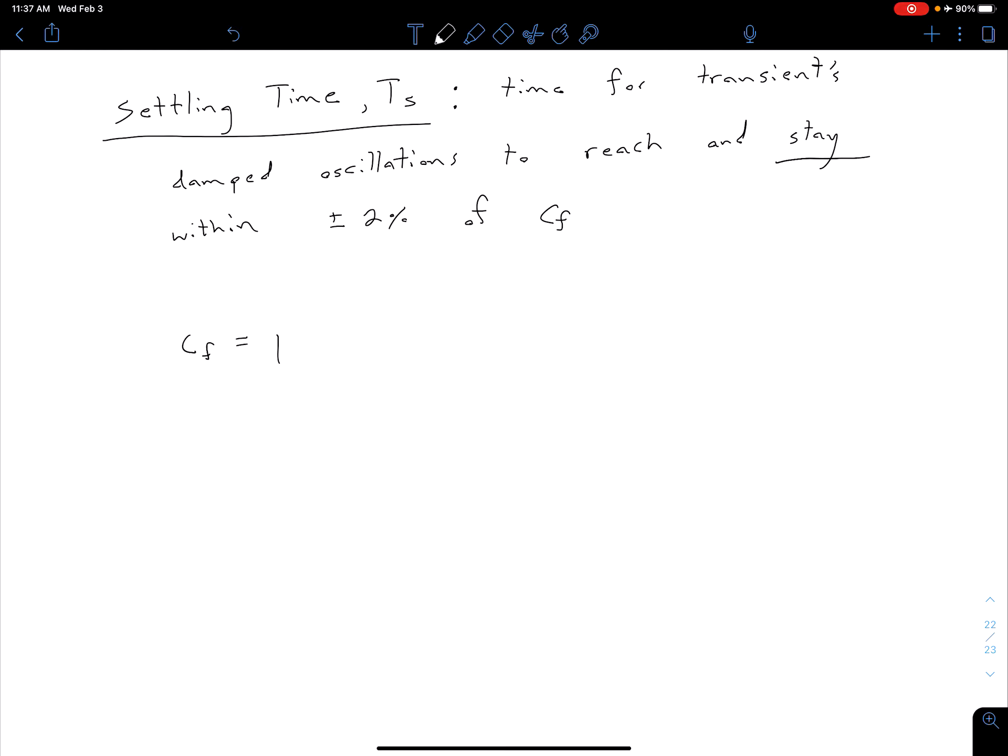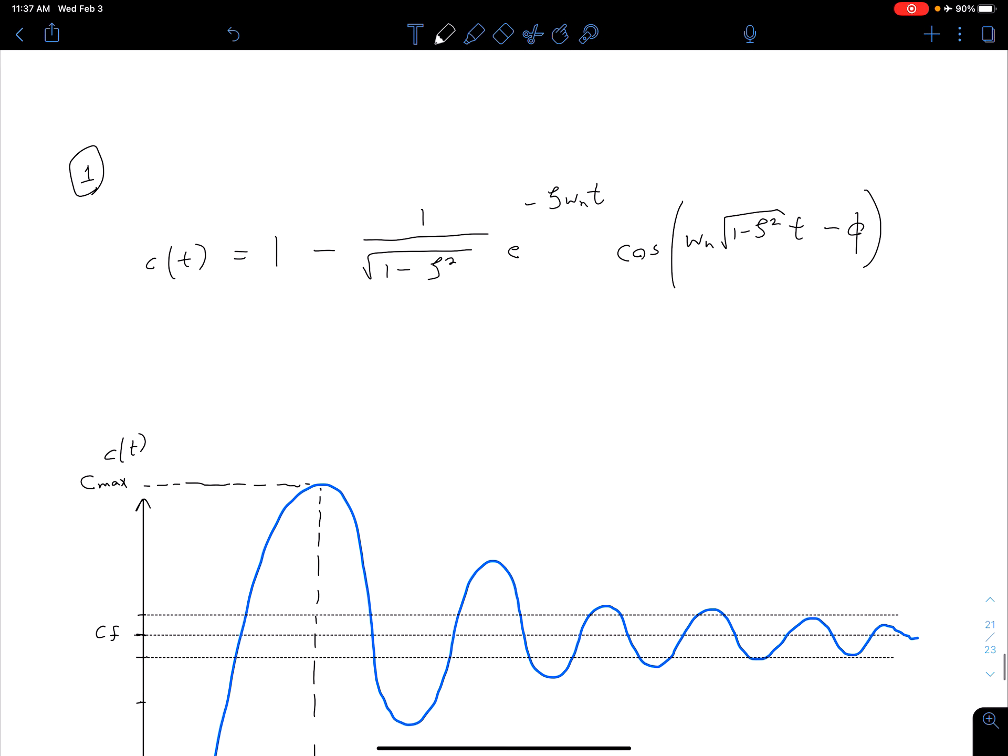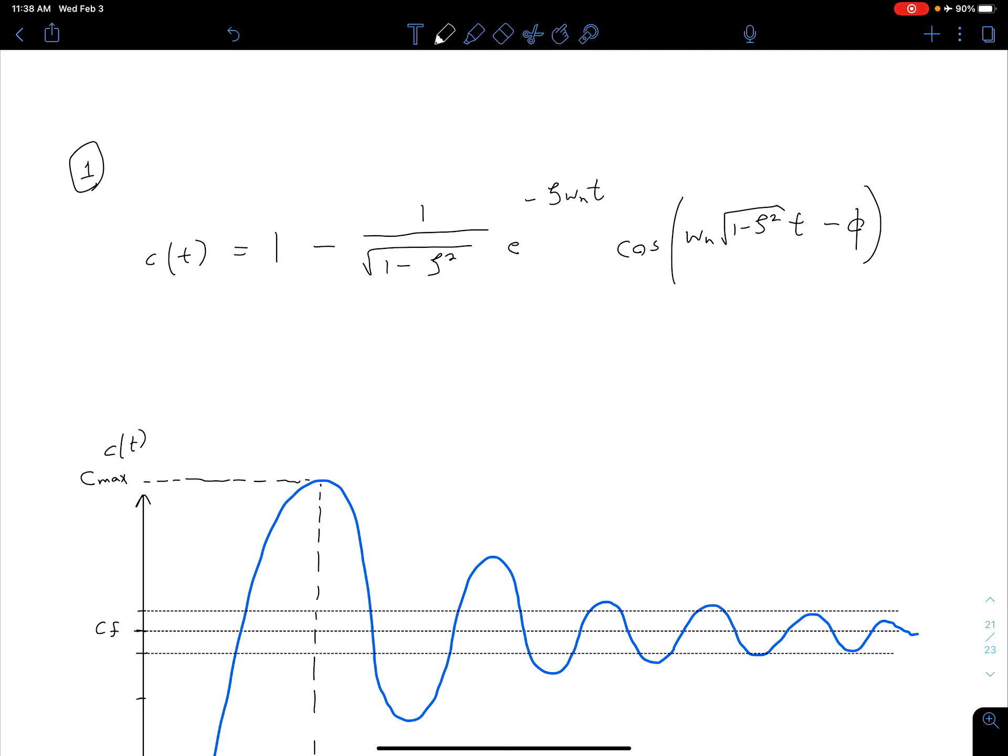What we can do then is, looking at our equation 1 here for our C of T, if we want this to be within 2% of 1, we can set a certain limit for this magnitude of our cosine function. Because essentially we have two parts to this equation: 1 minus this cosine with a decaying exponential envelope. So if we can set this to be less than 0.02, then that's going to give us our C of T between 1 minus 0.02 or less.